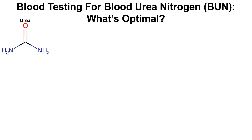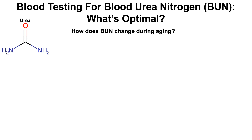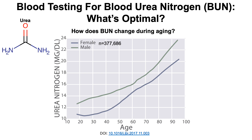Blood testing for blood urea nitrogen — what's optimal? The blood urea nitrogen test quantifies levels of urea, the metabolite that makes urine yellow, that are in your blood. So how do levels of blood urea nitrogen, or BUN, change during aging?